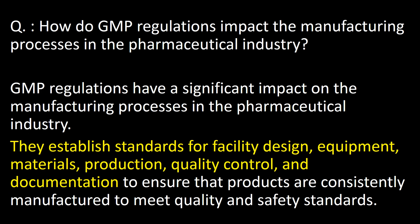How do GMP regulations impact the manufacturing processes in the pharmaceutical industry? GMP regulations have a significant impact on manufacturing processes. They establish standards for facility design, equipment, materials, production, quality control, and documentation to ensure that products are consistently manufactured to meet quality and safety standards.